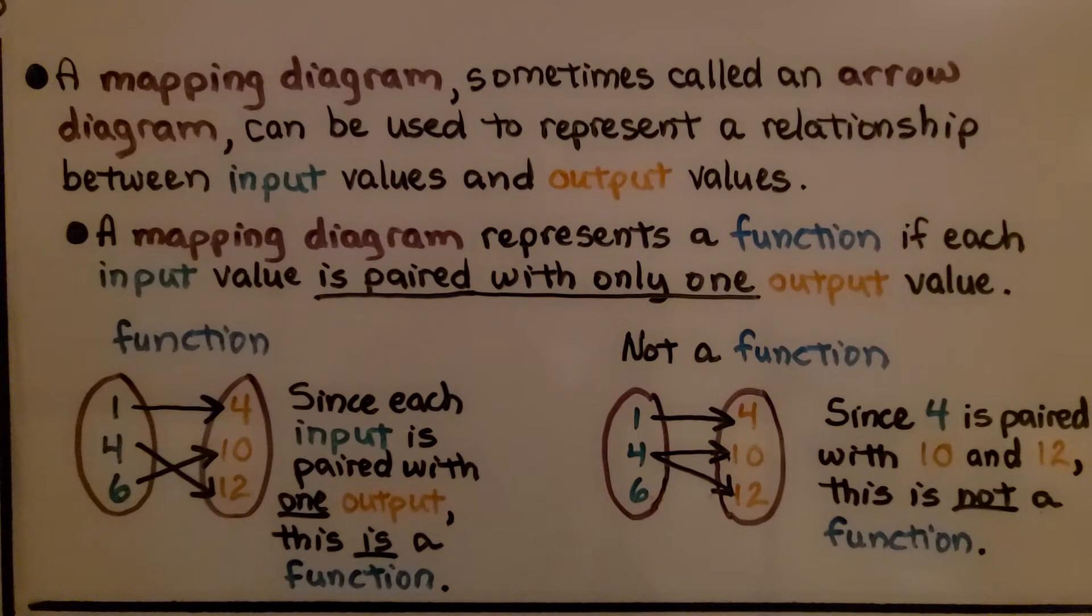A mapping diagram, sometimes called an arrow diagram, can be used to represent a relationship between input values and output values. A mapping diagram represents a function if each input value is paired with only one output value. So here's a function, this is not a function.